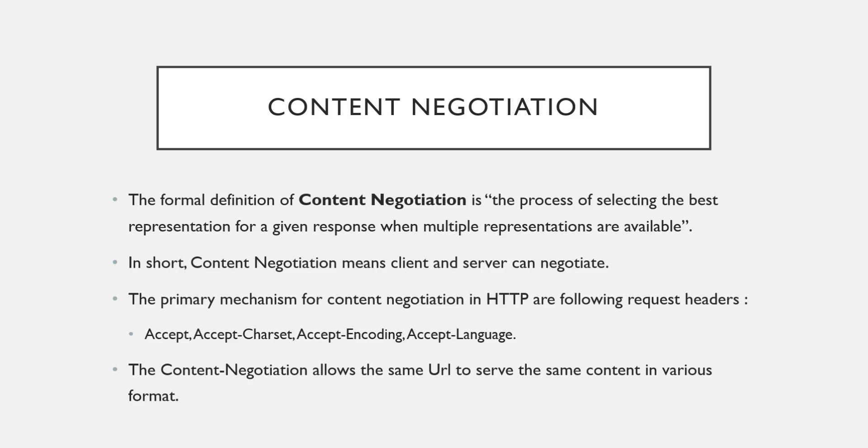Basically, it tries to represent the data in the client's expected format. If the client needs data in JSON format, it returns data in JSON format. If the client expects data in XML format, it returns data in XML format. But if the client requires data in HTML format and ASP.NET Web API cannot do it — because it has default support for XML, JSON, BSON, and form URL-encoded — it will try to choose the best representation and represent the data in that format.